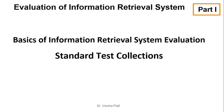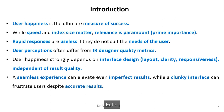Welcome to this video on evaluation of information retrieval systems. The subtopic is basic information retrieval system evaluation and standard test collections. User happiness is the ultimate measure of success. While speed and index size matter, relevance is of prime importance — rapid responses are useless if they do not suit the needs of the user.